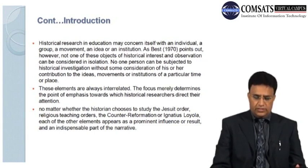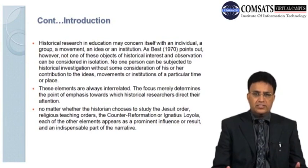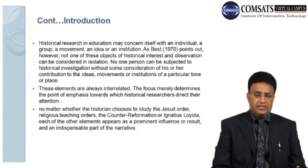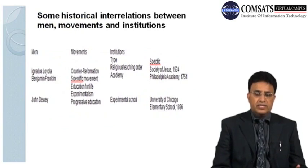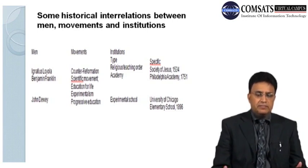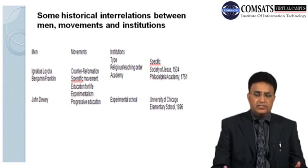No matter whether the historian chooses to study the Jesuit order, religious teaching orders, the counter-reformation, or Ignatius Loyola, each of the other elements appear as a prominent influence or result and an indispensable part of the narrative. Some of the historical interrelations between men, movements, and institutions can be summarized as follows. Some men like Ignatius Loyola, Benjamin Franklin, and John Dewey; movements such as the counter-reformation, scientific movement, education for life, experimentalism, and progressive education; and institutions like religious teaching orders, academies, and experimental schools — for example, the Society of Jesus established in 1534, the Philadelphia Academy in 1751, and the University of Chicago Elementary School in 1896.